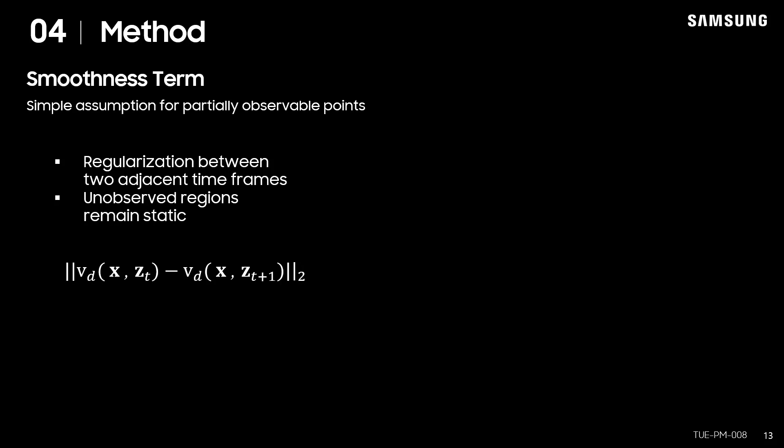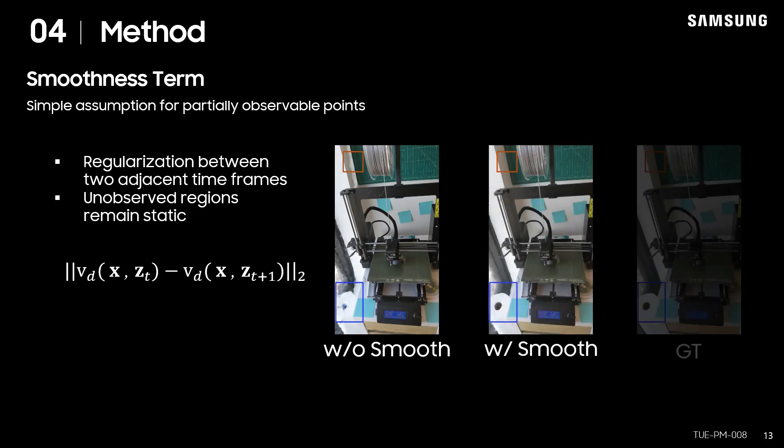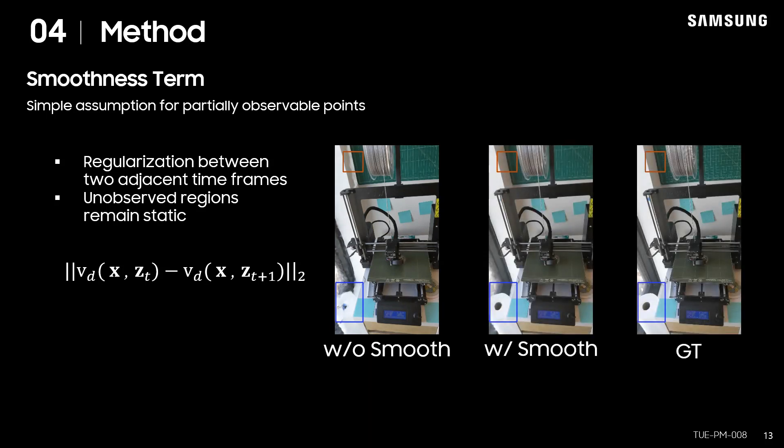As a regularizer, we introduced a simple smoothness term which relates 3D points in adjacent frames. The smoothness term is basically an L2 norm of the difference between the dynamic feature vectors at time t and t plus 1. The term is especially useful when some 3D points are partially visible in the whole sequence. As you can see, the boundaries of the rendered images show more clear results when the smoothness term is applied.